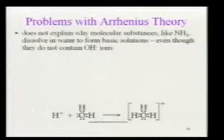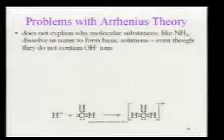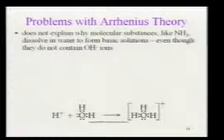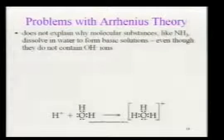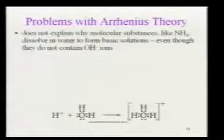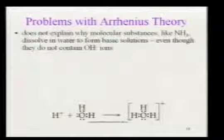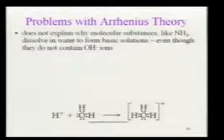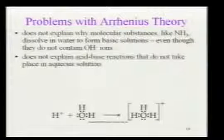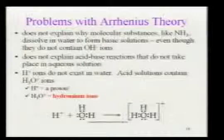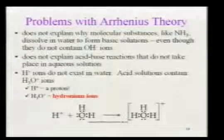There was a problem with Arrhenius's theory because it did not account for everything. For example, it did not explain why ammonia actually acts like a base — it can neutralize an acid — but yet you see no hydroxide ions associated with ammonia. How then could the definition of a base be something that gives off hydroxide, if there are no hydroxides to give off? This required a modified definition.